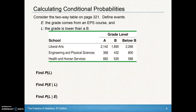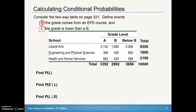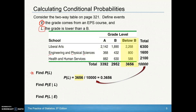Let's look at calculating conditional probabilities from a two-way table. We define event E as the grade coming from an EPS (engineering/physical science) course, and event L as the grade being lower than a B. It's helpful to find marginal totals for our counts. For the probability of L — the probability that a grade is lower than B with no conditions — we look at all grades below B, which is 3,656 out of a total of 10,000.